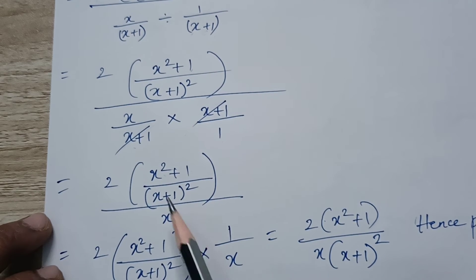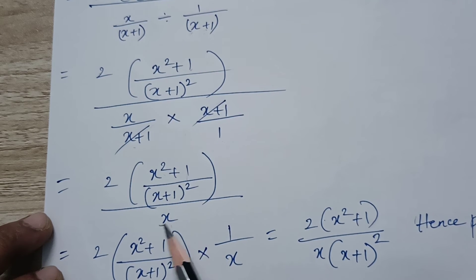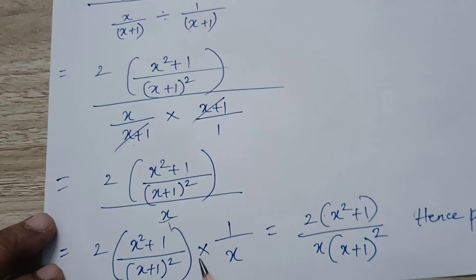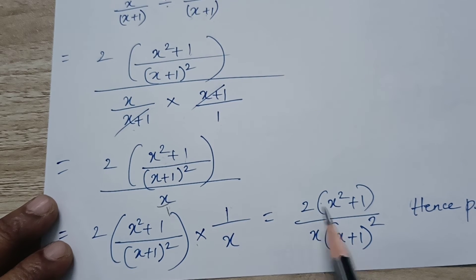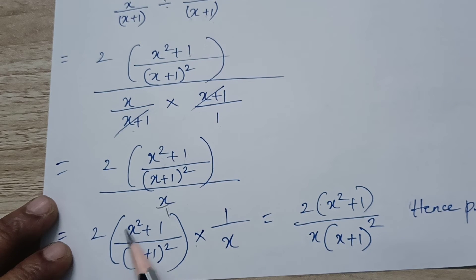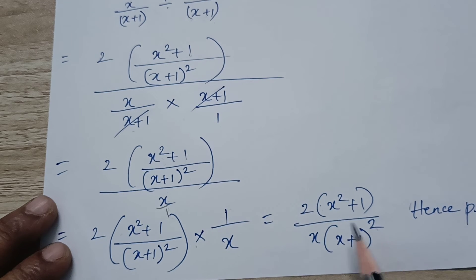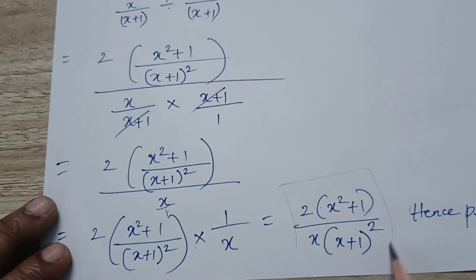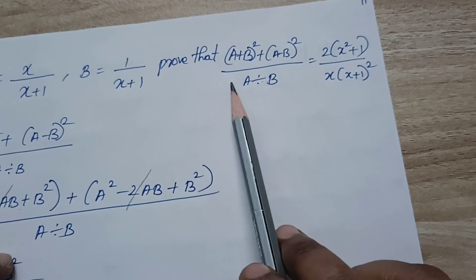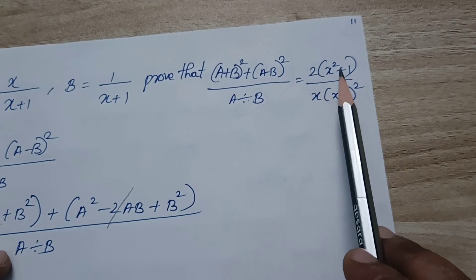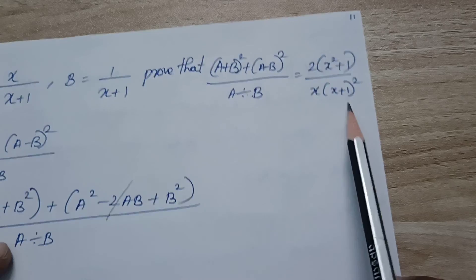Same again — division of fraction method. Divided by X, that is X by 1. Keep the first term, change division to multiplication, flip: 1 by X. That equals 2 into X square plus 1 divided by X into X plus 1 the whole square. Hence proved: A plus B the whole square plus A minus B the whole square divided by A divided by B equals 2 into X square plus 1 by X into X plus 1 the whole square. Hence proved.